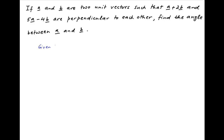We are given that vectors a and b are unit vectors, therefore the absolute values of vectors a and b is equal to 1. We are also given that vectors a plus 2b and 5a minus 4b are perpendicular, therefore their dot product is equal to 0.